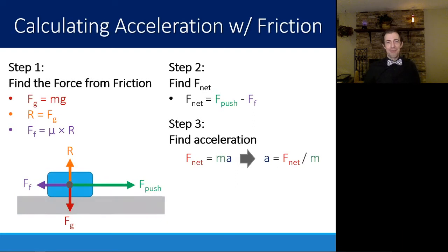In general, these are the steps that you're going to need to find acceleration if we're going to have an object that is starting to move. You need to first find the force of friction. To find the force of friction, you need R. To have R, you probably need to know the force of gravity. To know the force of gravity, you need to know the mass.